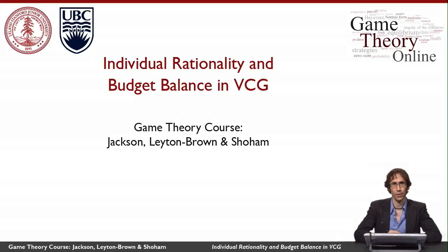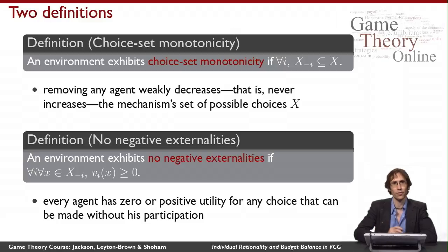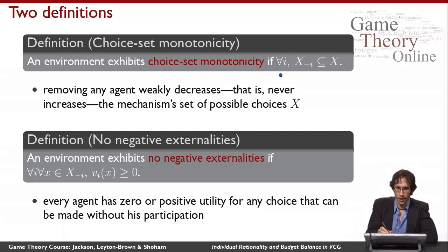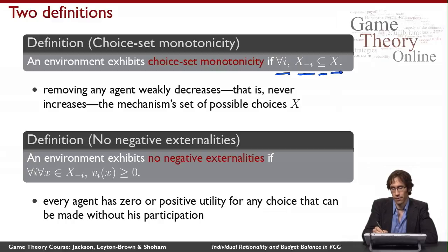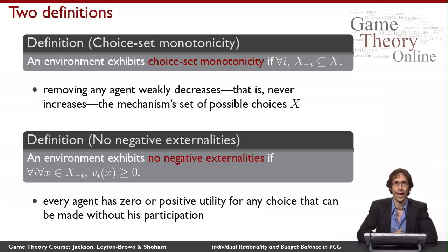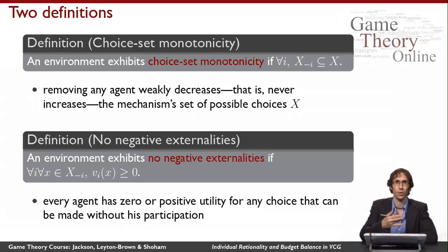What we'll see in this video is that we can have both of these two properties. To get individual rationality I'm going to need two different assumptions. The first is called choice set monotonicity, which says that for all agents the set of outcomes achievable without that agent present is a weak subset of the set of outcomes possible when that agent is present. So when I remove an agent, the mechanism's set of available choices weakly goes down — no new choices become possible when somebody gets removed.